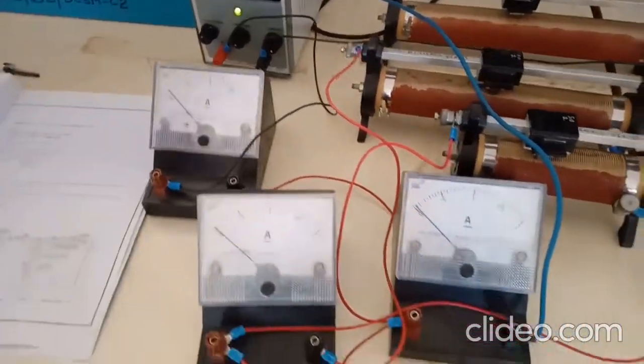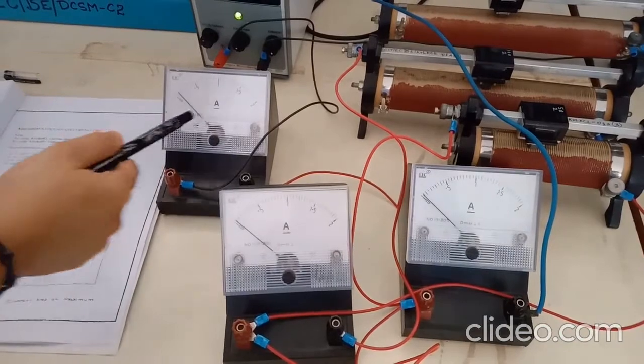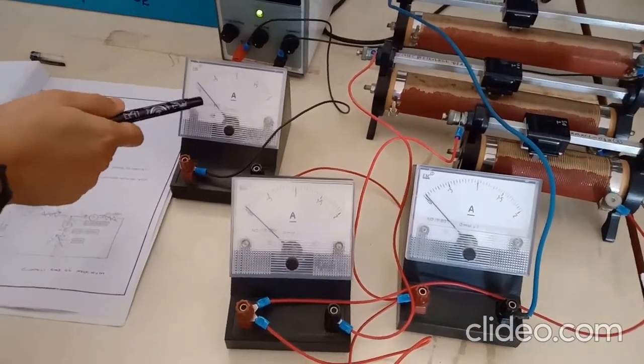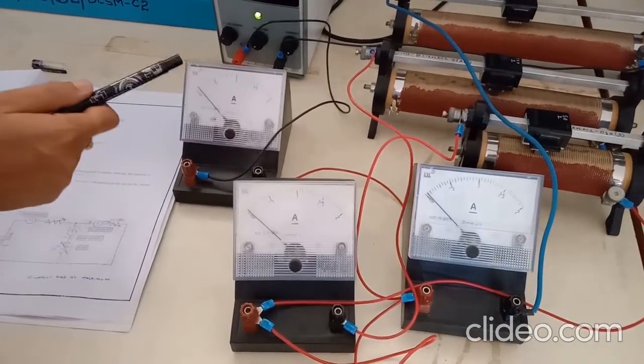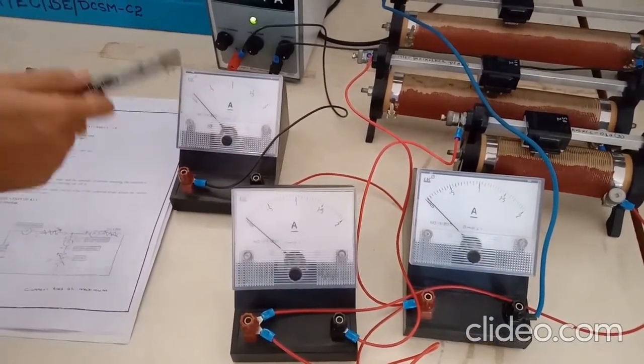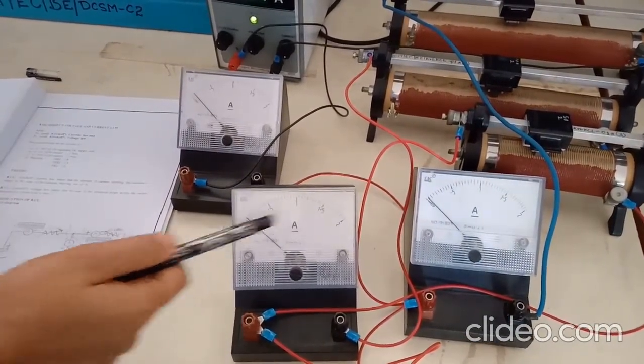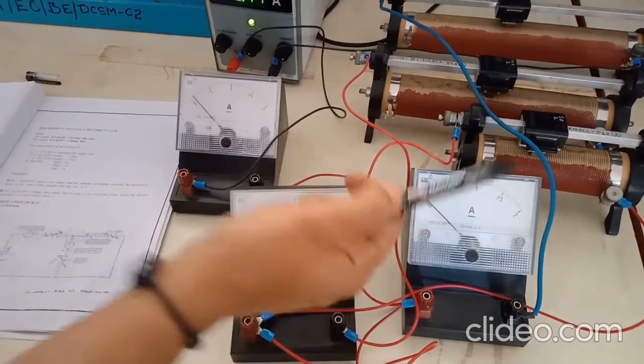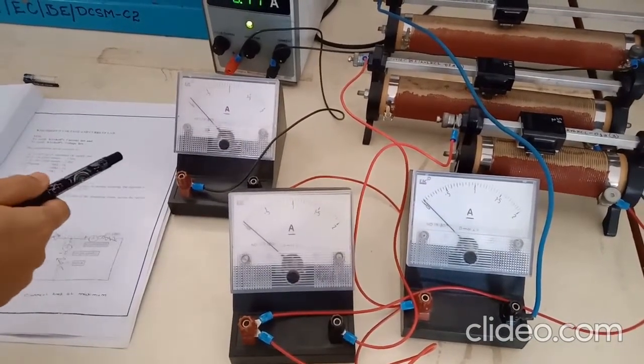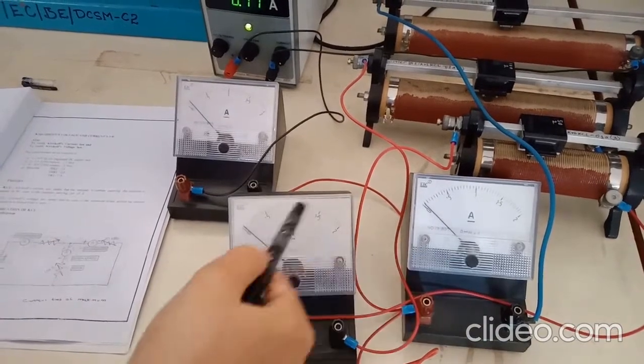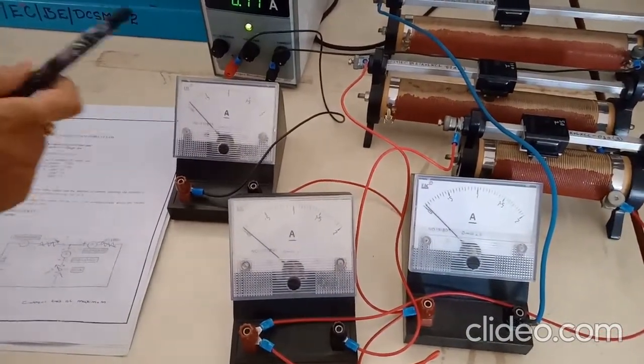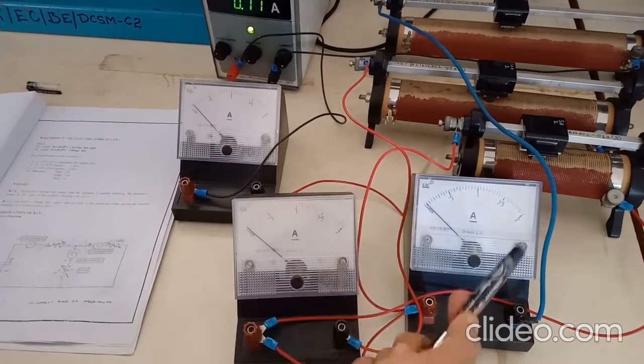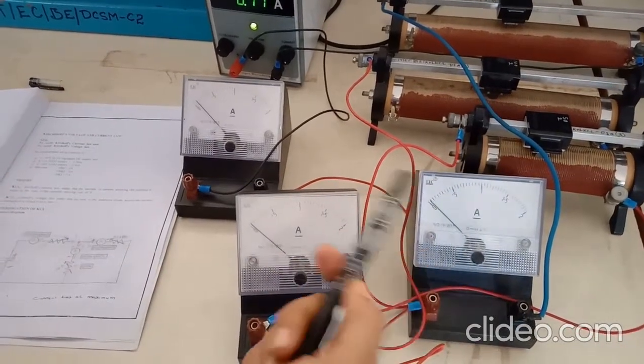Now it is at 10 volts. You have to note down the readings in ammeter 1, ammeter 2, and ammeter 3. Ammeter 1 reading is 0.1, ammeter 2 is 0.05, ammeter 3 is 0.05. The procedure is i1 equals i2 plus i3. When you add these two, it should equal this one. So i1 is 0.1, and 0.05 plus 0.05 equals 0.1, so KCL is verified.